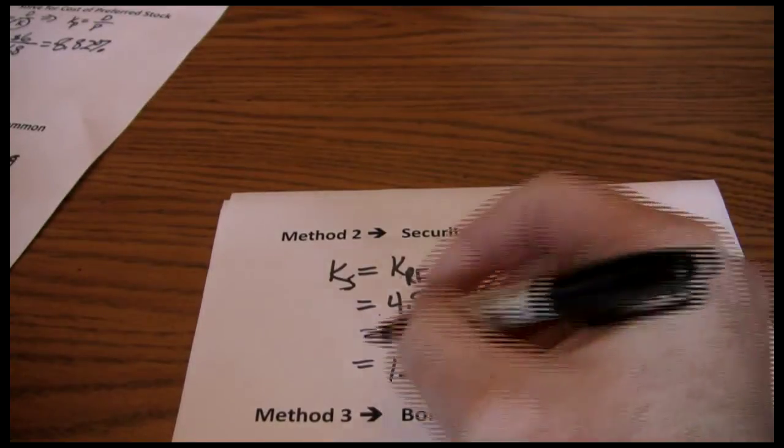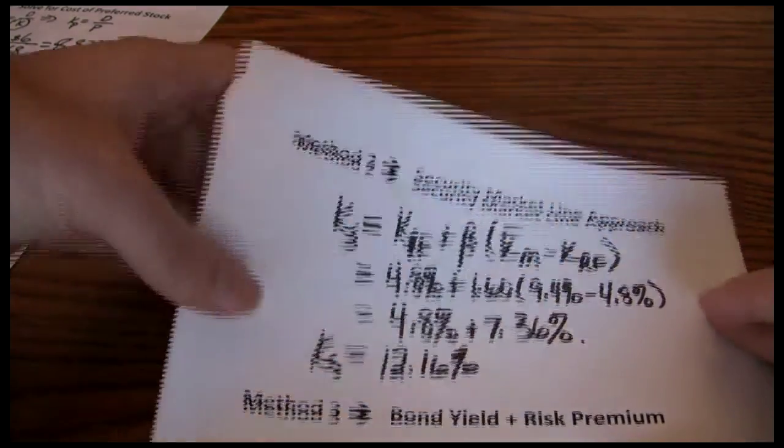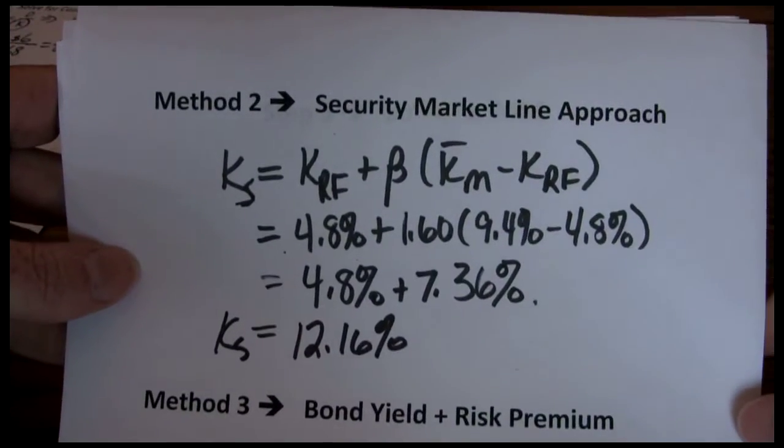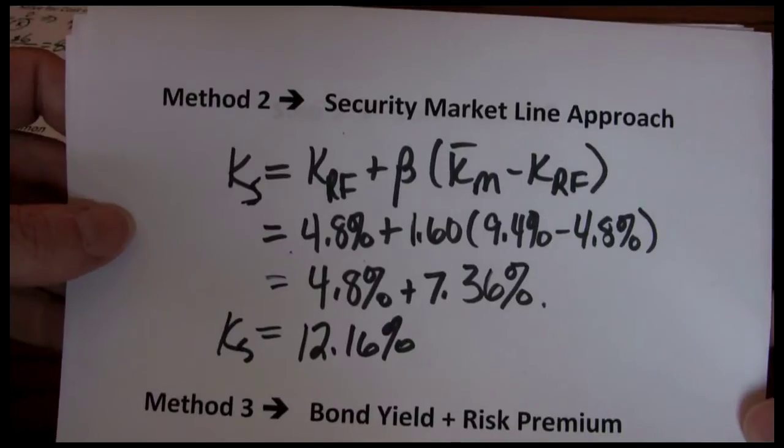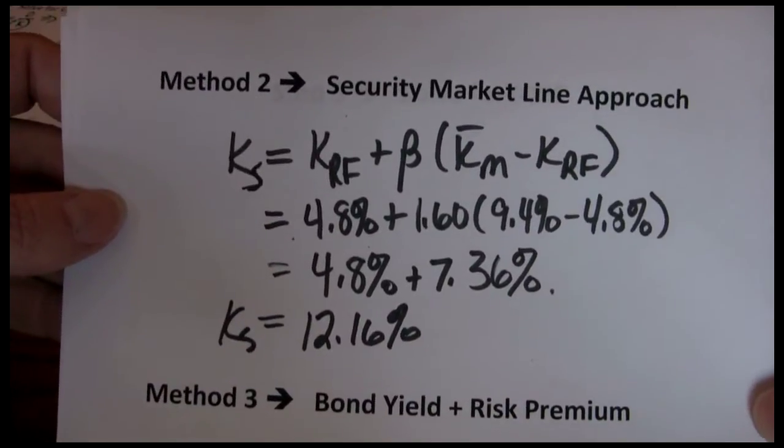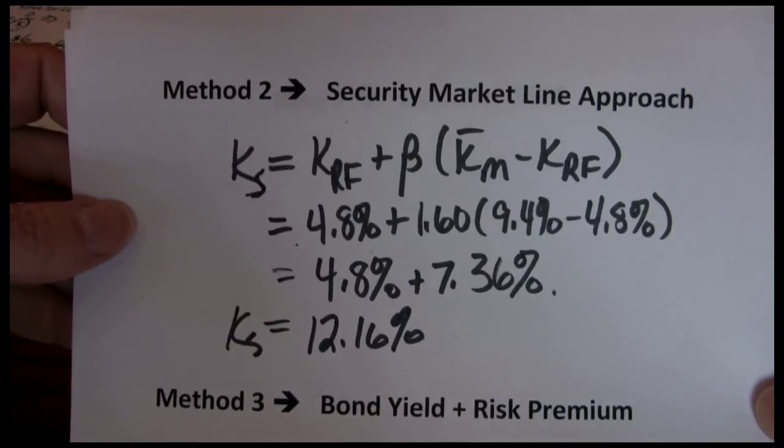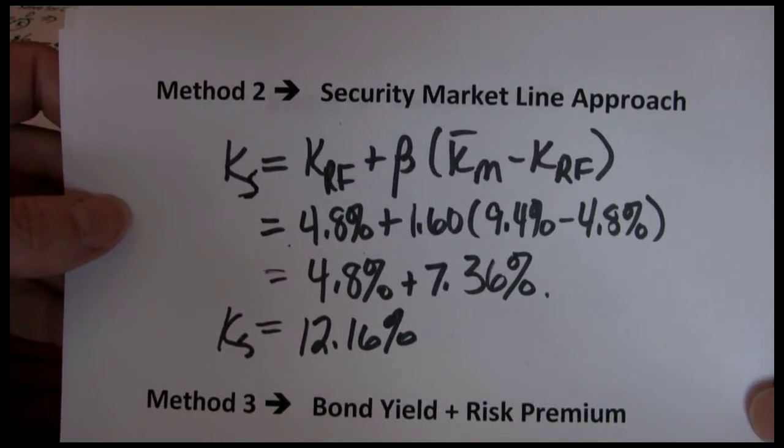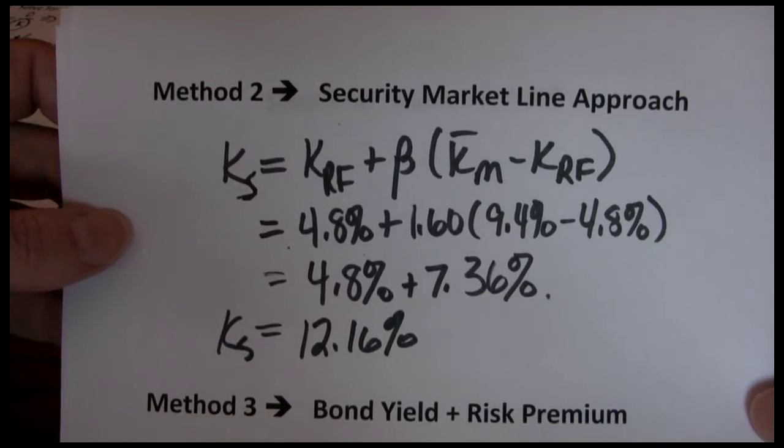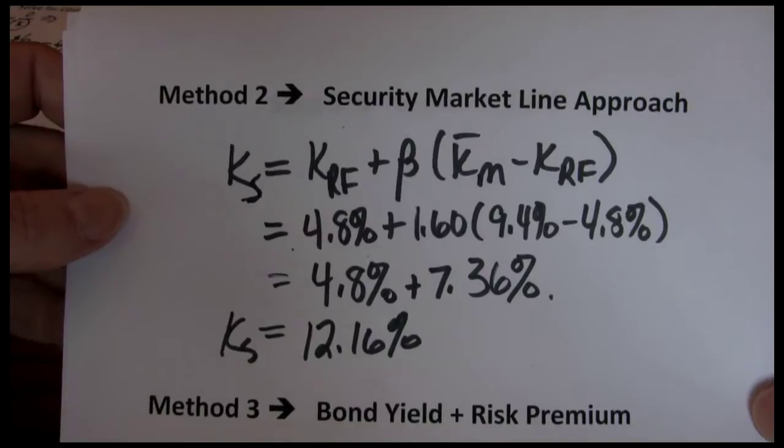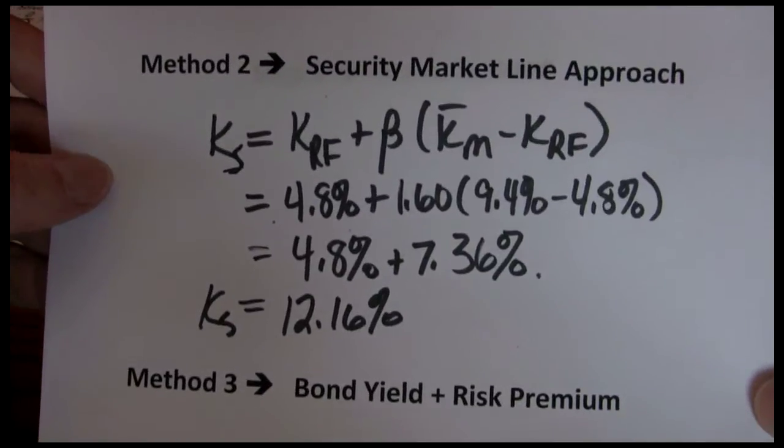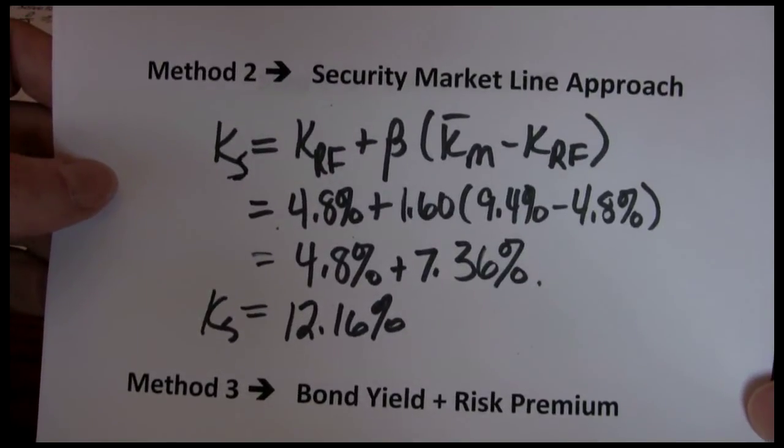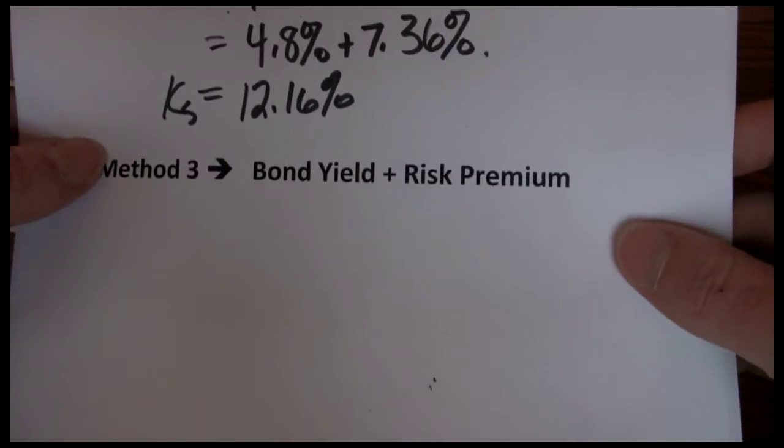Now the advantage of the security market line approach is it works for every company because we can estimate beta for any company. And the other values, the treasury yield is easy to find. The expected return on the market is something we can estimate. It doesn't require dividends. It doesn't require a constant growth rate. The downside is that most studies of the security market line show that beta may not be a reliable measurement of risk. Other factors may influence required returns. So we're a little bit concerned about the reliability of the security market line at this point. And we don't want to put too much weight on that model. So we want another backup approach again.